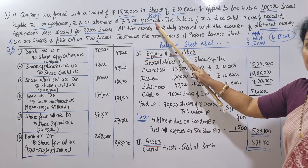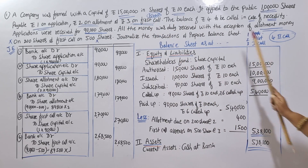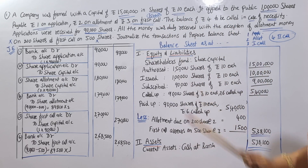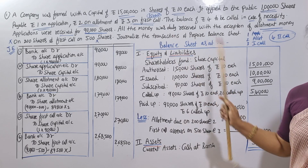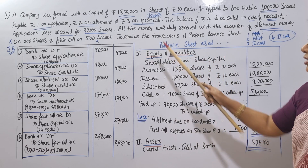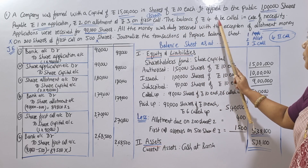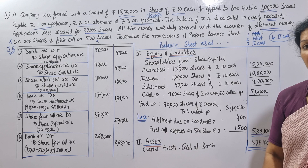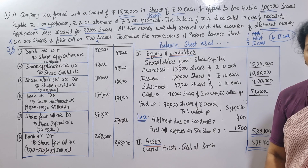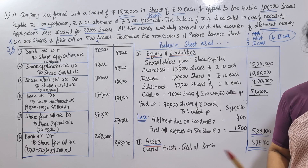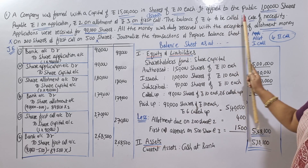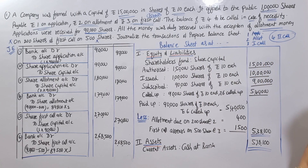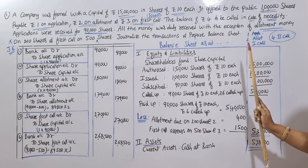On first call: 3 rupees per share. That makes 1 + 2 + 3 = 6 rupees called up. The balance of 4 rupees is to be called only in case of necessity — it is not required right now. Whenever necessary, they will collect the remaining 4 rupees. We will focus on application, allotment, and first call only.